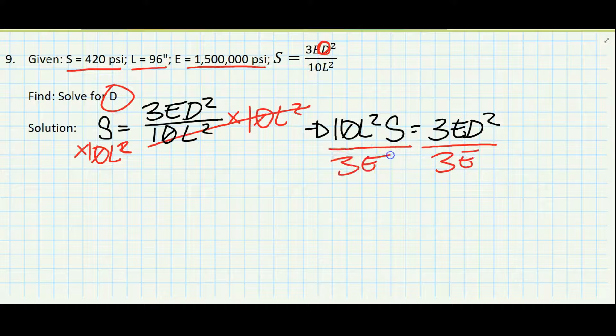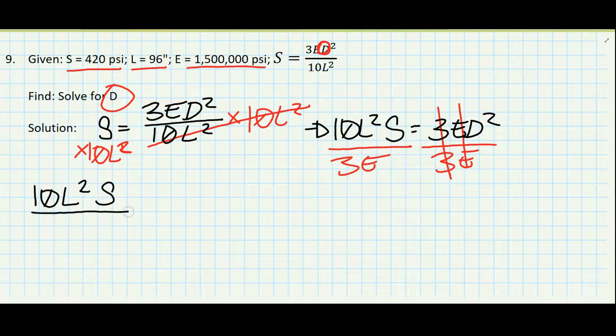Then we'll divide both sides by three E to get the D squared by itself. So the threes cancel out on the right side, the E's cancel out on the right side, and we're left with ten L squared times S over three E equals D squared.